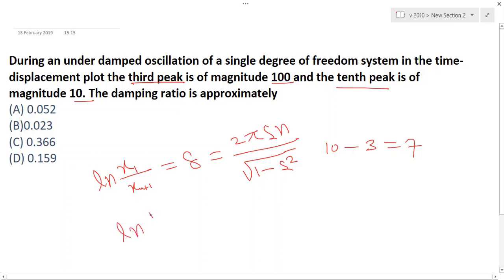So here is given x1 is 100 and another peak, 10th peak value is 10, equal to 2 pi zeta. And n is nothing but 7, because third peak to 10th peak, that is 3 to 10th peak, so here is 7 divided by square root of 1 minus zeta square.